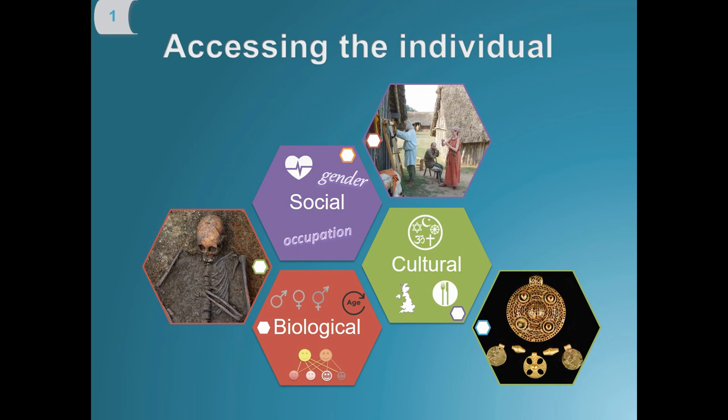So firstly, how do we access the individual in archaeology? For me, this is where integrating science and theory really comes to the fore. We as archaeologists love to characterize people in the past and there are many different ways. This is a basic, simplistic demonstration of my understanding of accessing individuality, but it's not exclusive or exhaustive. What's interesting is that we have different layers of complexity, and I wanted to look at genetics today to access the biological aspect of that in particular.